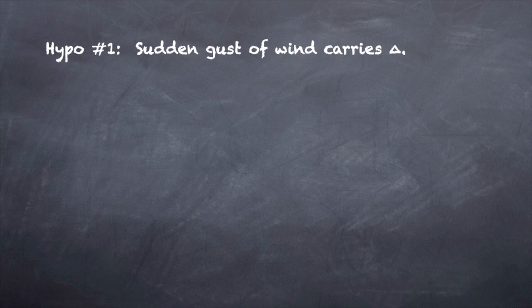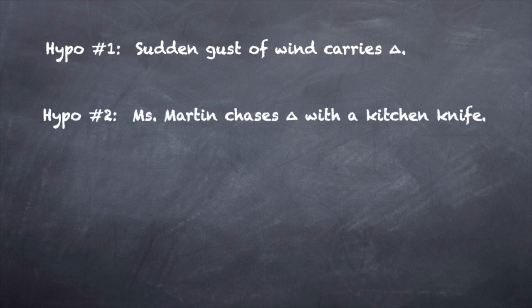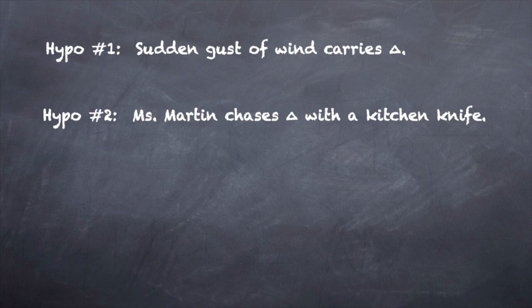Now consider a second hypothetical variation. Mrs. Martin chases Mr. Martin into the street with a kitchen knife. As before, he curses drunkenly once he is in the street. Convictable? The answer in hypothetical two is that Martin is convictable. Martin may not want to be in the street, but he got there under his own power.